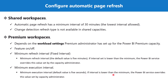If the report user has specified a value lower than the minimum, the Power BI service overrides the value set by the capacity administrator. So the capacity administrator controls the minimum value, and the report developer cannot set a value lower than that. Now let's go to Power BI Desktop.